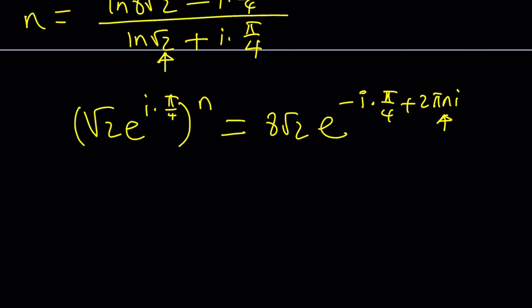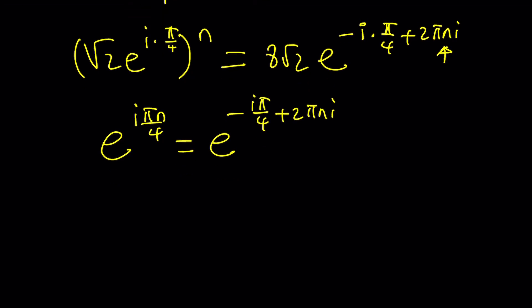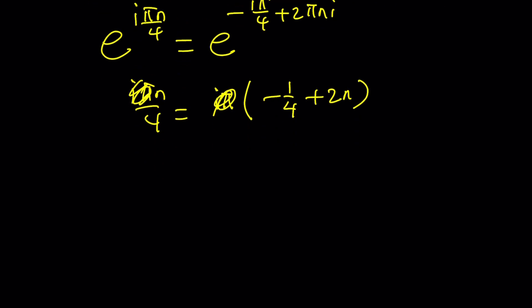Now let's go ahead and compare powers of e. On one side, we have e^(iπn/4). And on the right hand side, we have e^(-iπ/4 + 2πki). Let's go ahead and set those powers equal to each other. iπn/4 equals. And we can kind of take out an iπ here. -1/4 plus 2k. Awesome. iπ cancels out, leaving us with something like this.